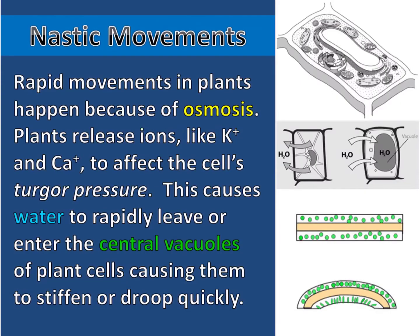Rapid movements in plants happen because of osmosis. Plants release ions like potassium and calcium to affect the cell's turgor pressure. This causes water to rapidly leave or enter the central vacuoles of plant cells, causing them to stiffen or droop quickly.